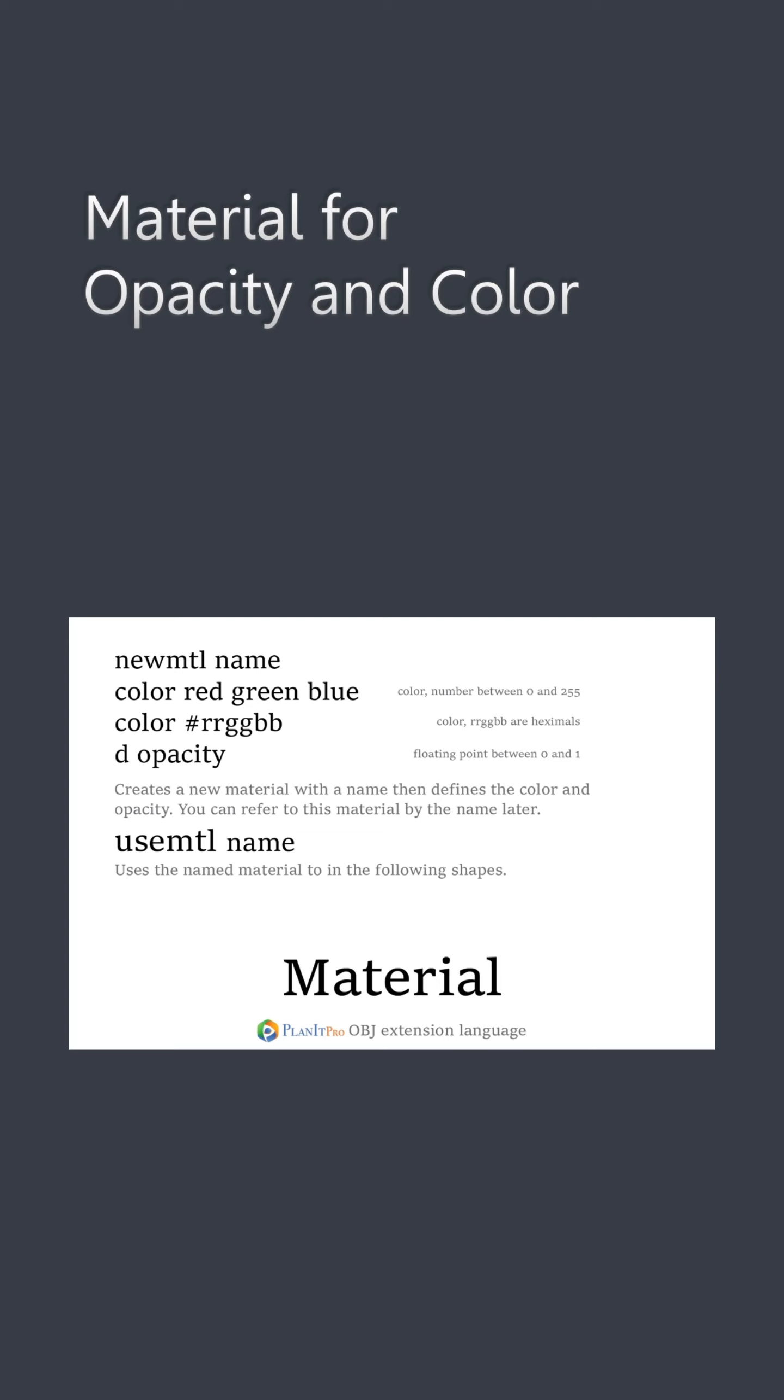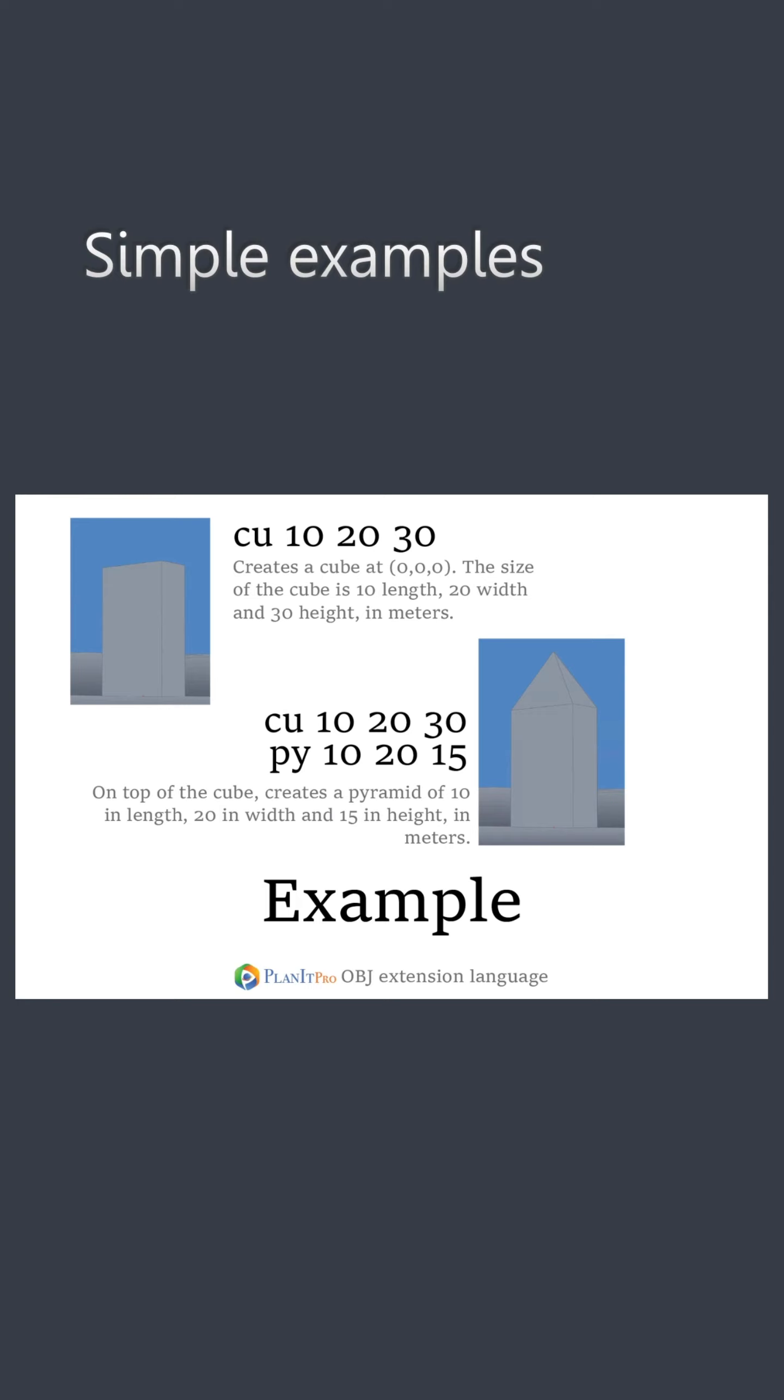Now let's take a look at a couple examples, starting with two simple ones. First, let's define a cube of 10 by 20 by 30. By default, all the values are in meters. So this is what that will look like.